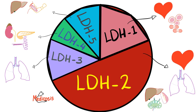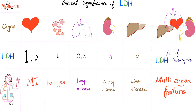To summarize: LDH1 — heart and red blood cells. LDH2 — heart, lungs, and reticuloendothelial organs. LDH3 — lungs. LDH4 — kidney, pancreas, and placenta. LDH5 — liver and skeletal muscles. So what's the clinical significance? The heart has LDH1 and LDH2. If both are elevated, especially if LDH1 exceeds LDH2, this is most likely myocardial infarction.